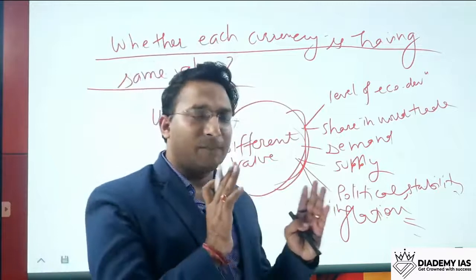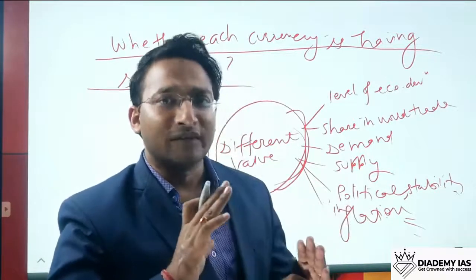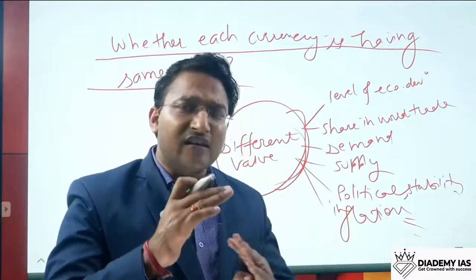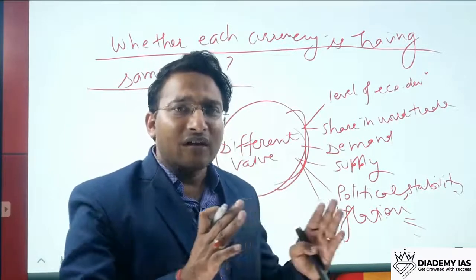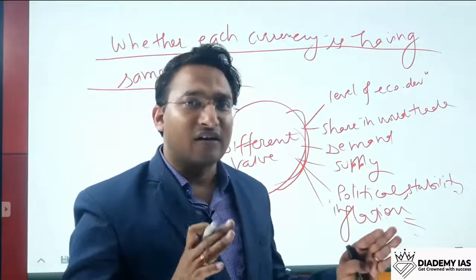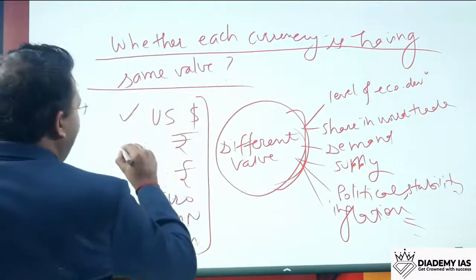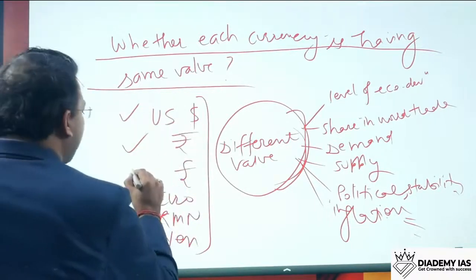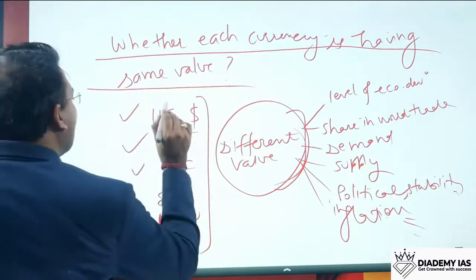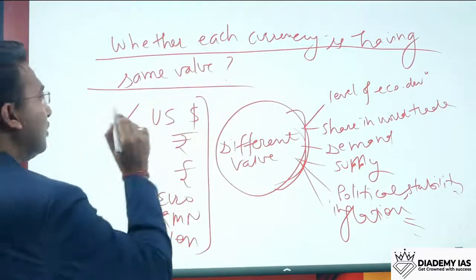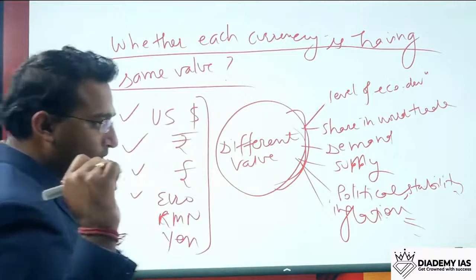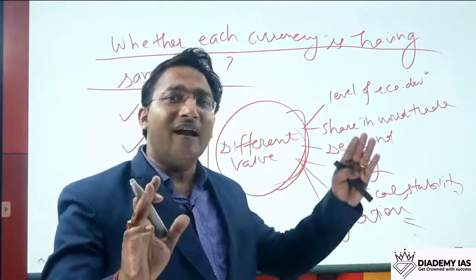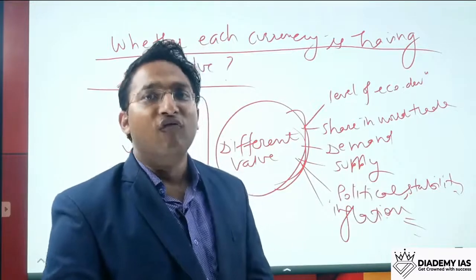To perform transactions — import, export, capital movement, salary payment — when we want to convert currencies, a certain relation has to be established between different currencies. For example, how many Indian rupees are required to buy one US dollar, how many pounds are required to buy one US dollar. The relation between the domestic currency and the foreign currency is called the exchange rate.